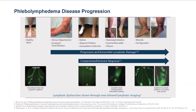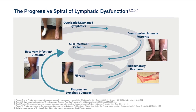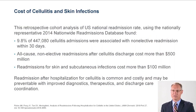Flebolymphedema disease progression is now recognized by near-infrared imaging and correlated with clinical and physical findings. This slide demonstrates the progressive spiral of lymphatic dysfunction: with advanced flebolymphedema, the lymphatic system is overloaded, resulting in compromised immune response. This increases the risk of skin infection and cellulitis. With the development of cellulitis, lymphatic function is further compromised and damaged, resulting in skin fibrosis and subsequent progressive lymphatic damage, creating a vicious cycle.